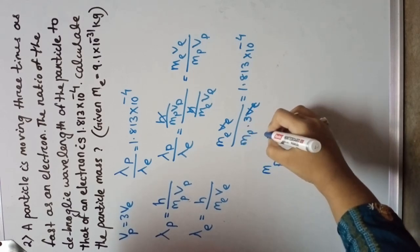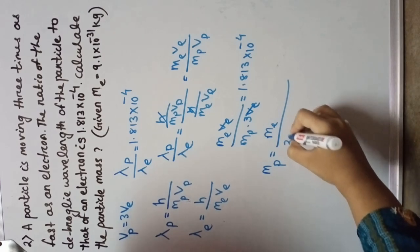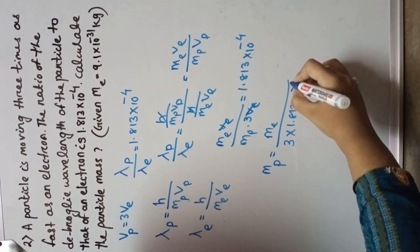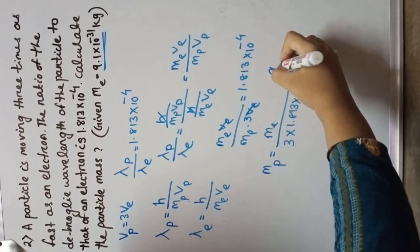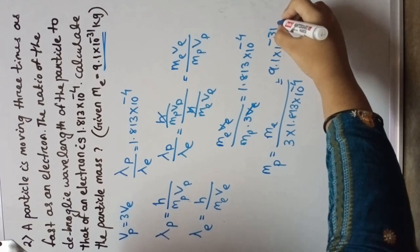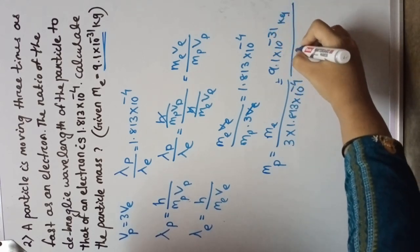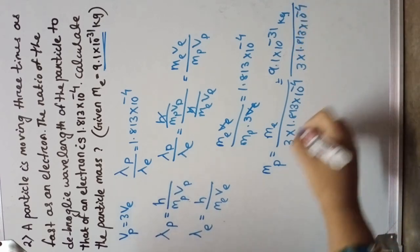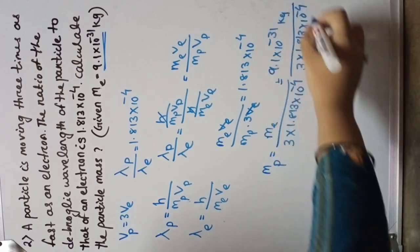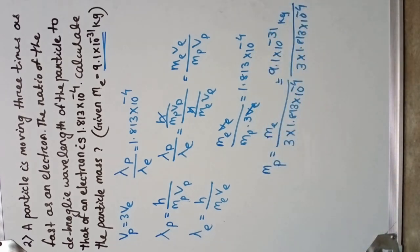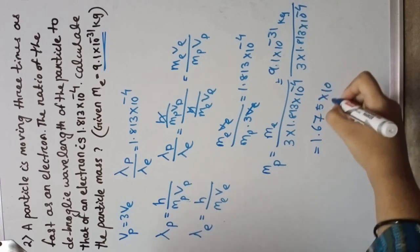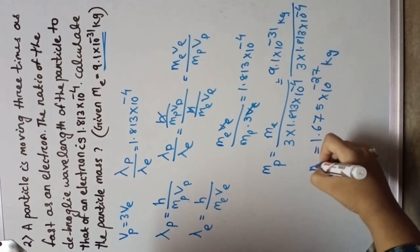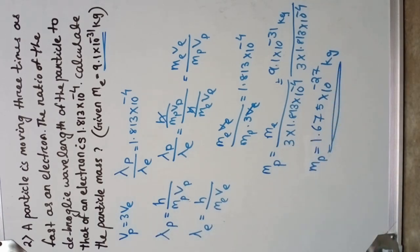Then mass of the particle m_p equals to m_e divided by 3 into 1.813 into 10 to the power minus 4. Putting the value of mass of electron as 9.1 into 10 to the power minus 31 kg divided by 3 into 1.813 into 10 to the power minus 4, and solving this, we get 1.675 into 10 to the power minus 27 kg. The mass of the particle is nearly equal to the mass of a proton or neutron.